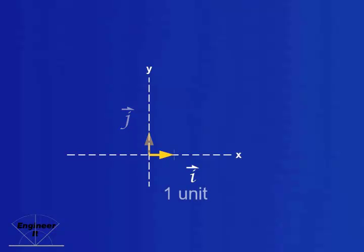The unit vector i is multiplied by the scalar v sub x to indicate the x component of the vector, and unit vector j is multiplied by the scalar v sub y to indicate the y component of the vector. So, vector v can be written as vector components.